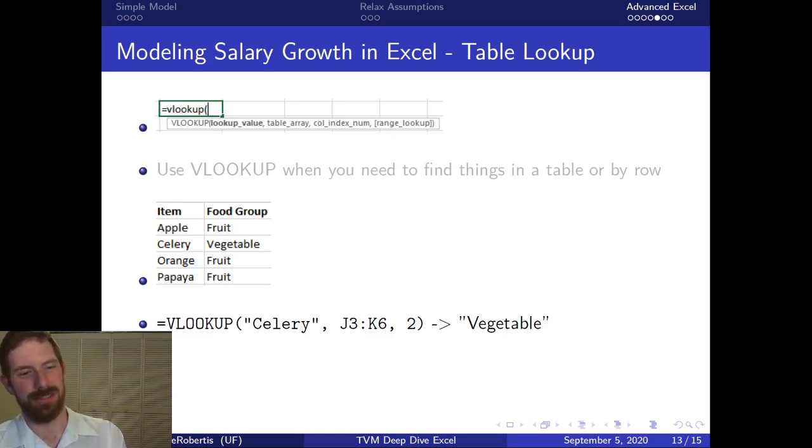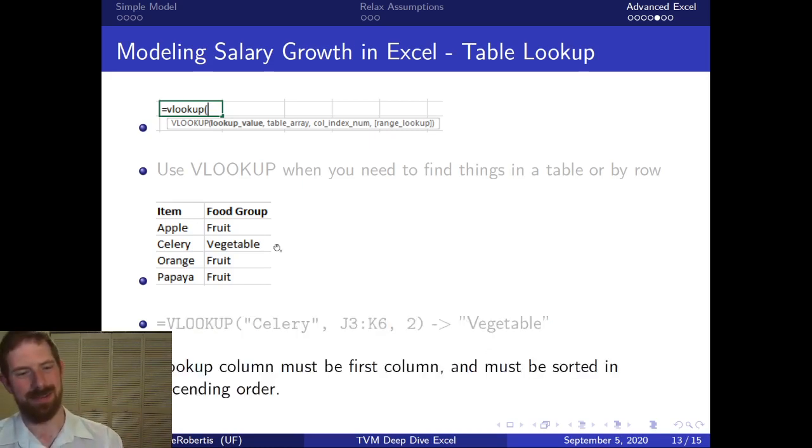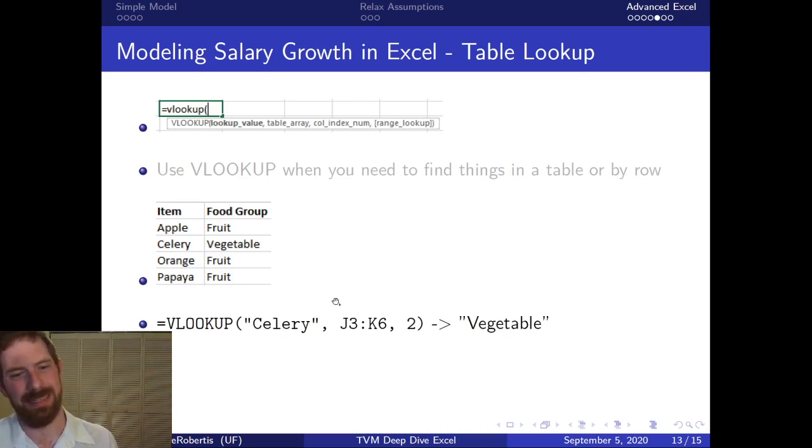With VLOOKUP we can say we want to figure out whether celery is a fruit or a vegetable. We can pass celery to VLOOKUP and we give it the range of the table, and then we say we want to look up the value from the second column, and that's going to give us vegetable. That's the basic idea, you're just looking up a certain column's value by the first column's rows value.